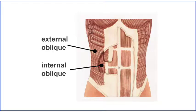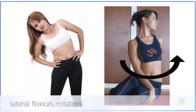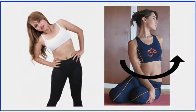Next, the obliques. The internal obliques are oriented at an upward angle at the sides of the abdomen. The external obliques are oriented downward. Joint actions of the obliques are lateral flexion of the spine and rotation of the spine.